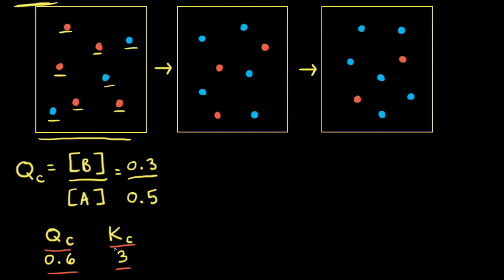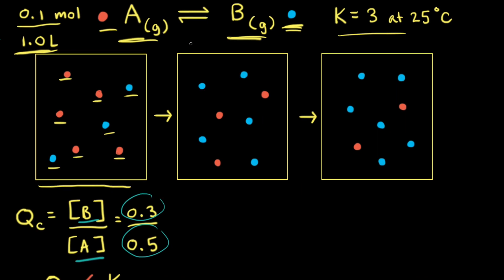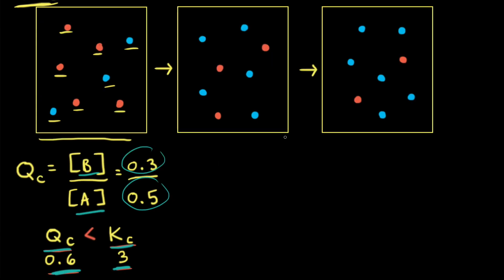QC is equal to 3/5 or 0.6, and KC is equal to 3. So Q is not equal to K — QC is less than KC. Since Q is less than K, the reaction is not at equilibrium. To reach equilibrium, Q needs to equal K. Since Q is much smaller than K, we need to increase the numerator and decrease the denominator, meaning we have too many reactants and not enough products. Therefore, the net reaction moves to the right to make more products — more blue particles — and the number of red particles decreases.